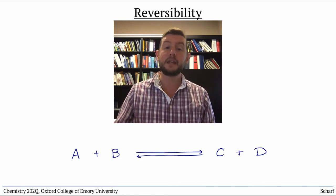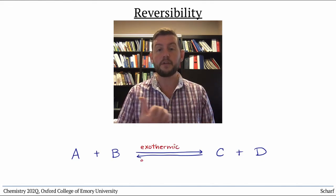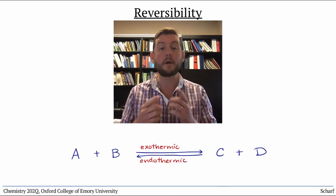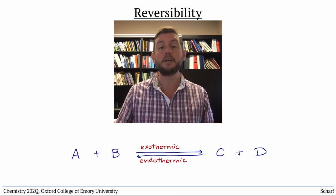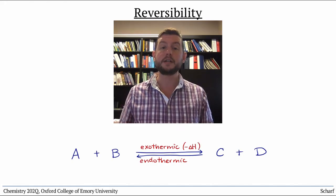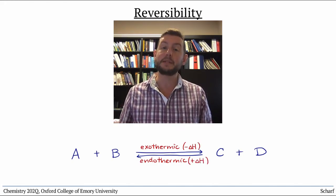If a particular reaction is exothermic in the forward direction, then its reverse is endothermic, but with exactly the same amount of heat transferred. In other words, if a particular reaction has a negative delta H, then its reverse has the same magnitude of its delta H, but with the opposite sign.